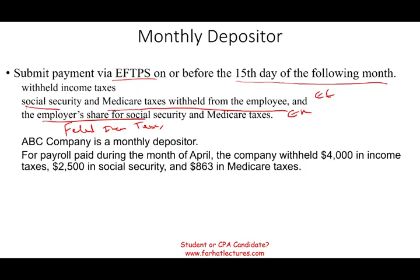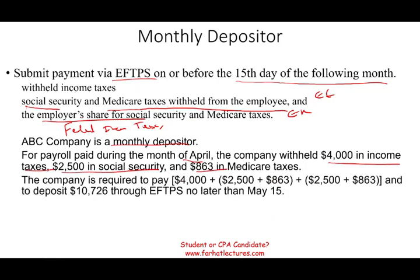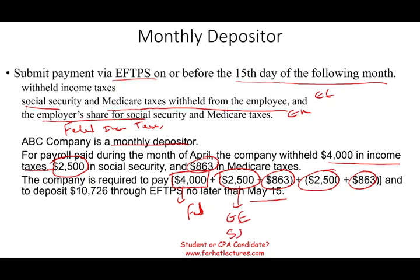For example, ABC Company is a monthly depositor. For payroll paid during April, the company withheld $4,000 in income taxes, $2,500 in Social Security, and $863 in Medicare. The company will have to pay by May 15th. Remember, they withheld $2,500 for Social Security and $863 for Medicare — they also have to match what they took from the employee. Therefore, they send the $4,000 federal income tax withheld, plus employee Social Security, employee Medicare, employer Social Security, and employer Medicare — all of it goes to Uncle Sam.